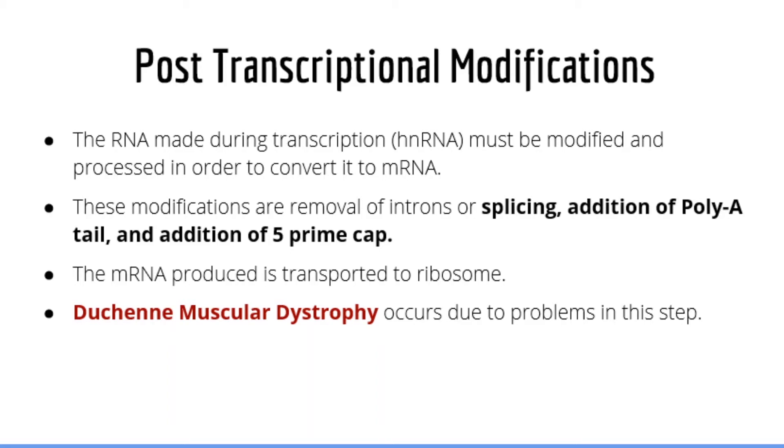It is important to know that Duchenne and Becker muscular dystrophy are believed to occur due to issues with splicing, which is the process of removing introns. We will talk more about these disorders in future videos.